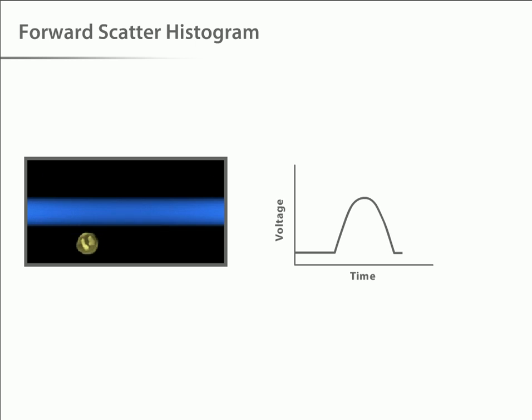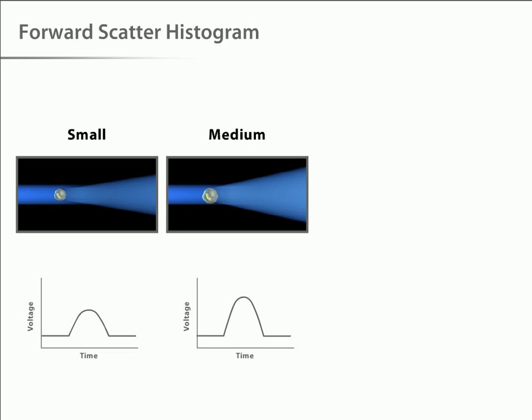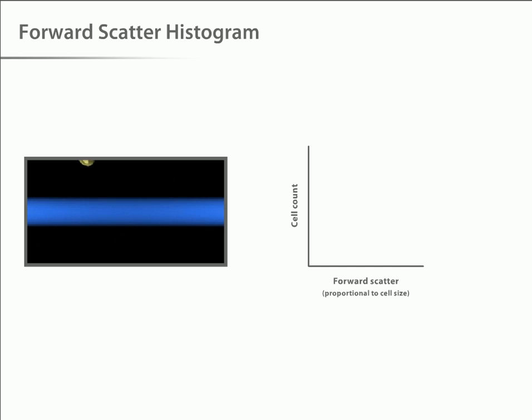The scattered light received by the detector is translated into a voltage pulse. Because small cells produce a small amount of forward scatter, and large cells produce a large amount of forward scatter, the magnitude of the voltage pulse recorded for each cell is proportional to the cell size. If we plot a histogram of these data, smaller cells appear toward the left, and larger cells appear toward the right.